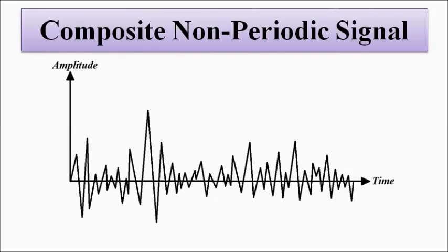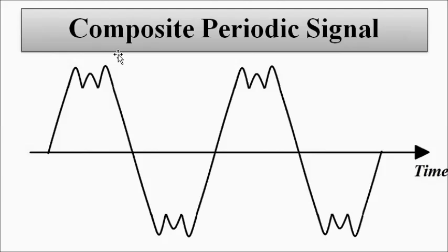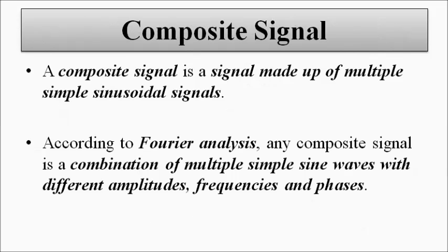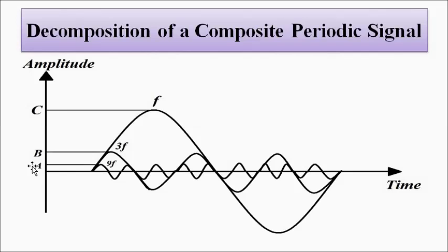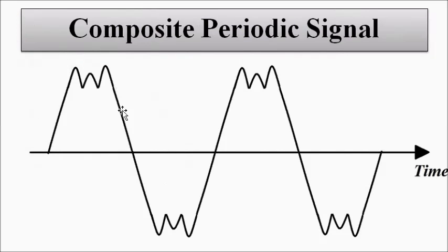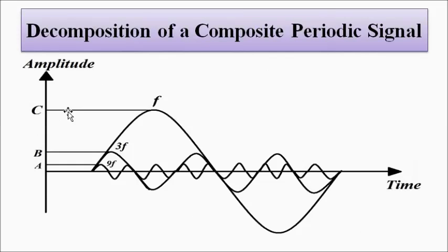So, how do we decompose this signal into its individual sinusoidal signals? A composite signal is a combination of multiple simple sinusoidal signals. To decompose it: the big signal, then the two peaks at the two sides, then the middle one. It will look something like this. This is the big sinusoidal signal with maximum amplitude — this big one, with maximum amplitude C.